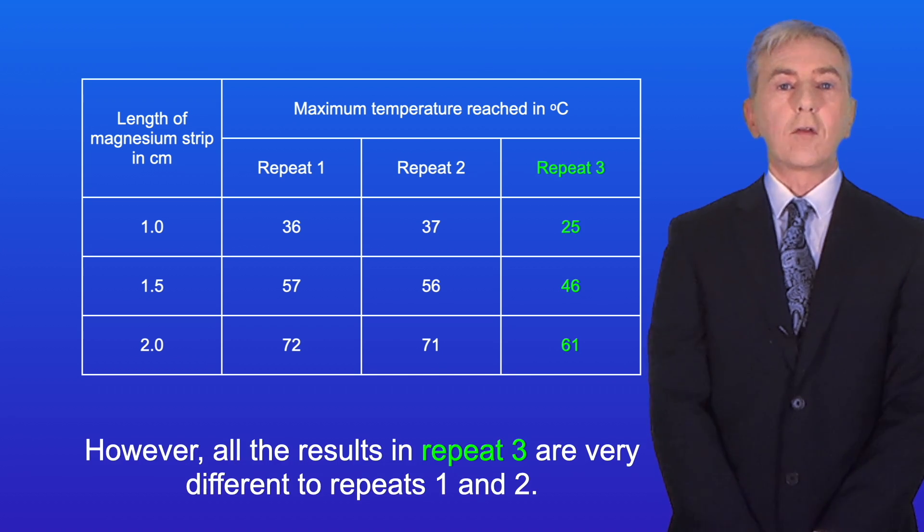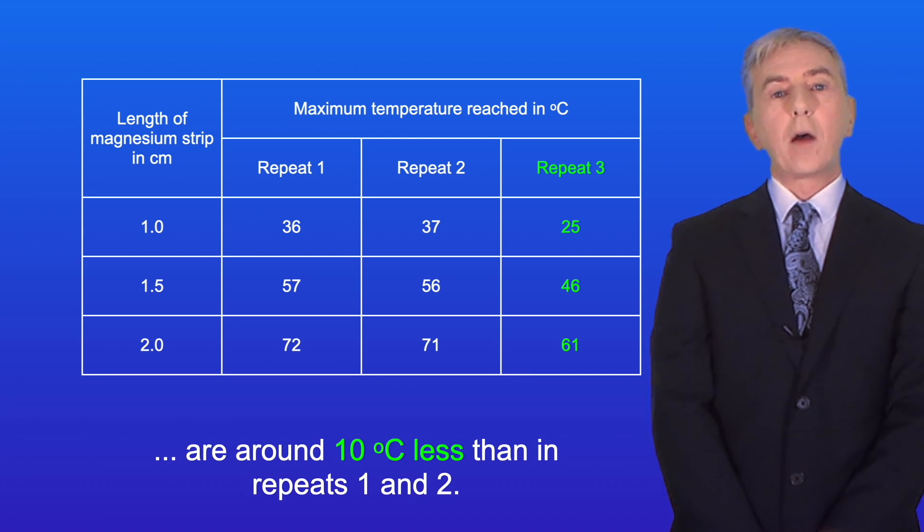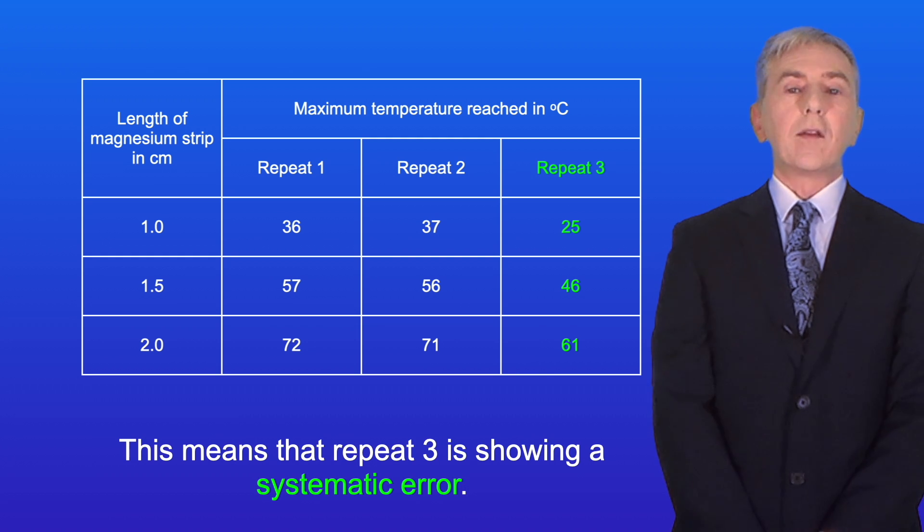However, all the results in repeat three are very different to repeats one and two. In all cases the temperatures reached in repeat three are around 10 degrees celsius less than in repeats one and two. This means that repeat three is showing a systematic error.